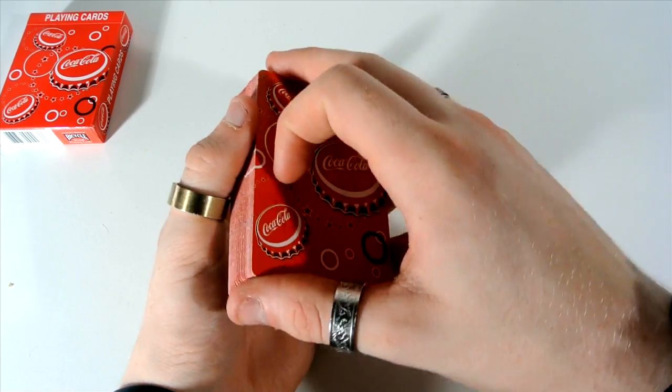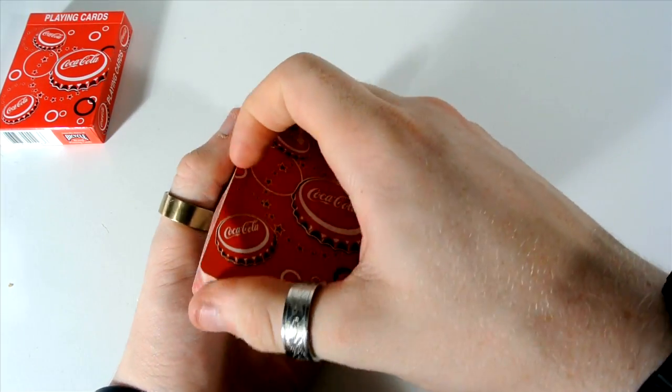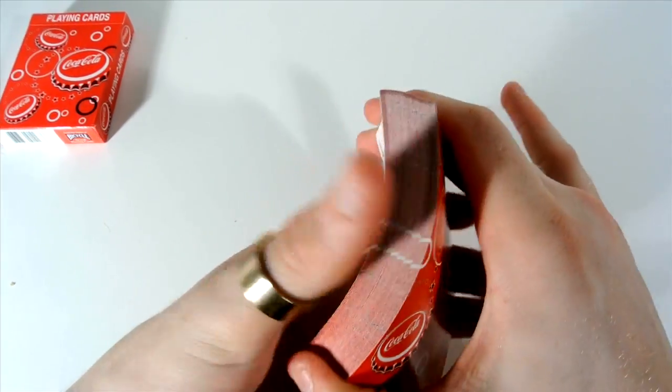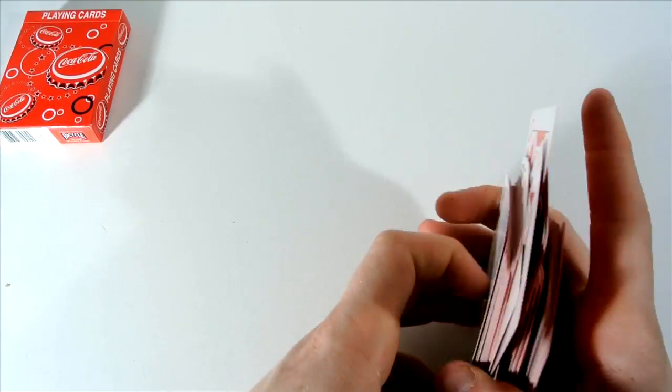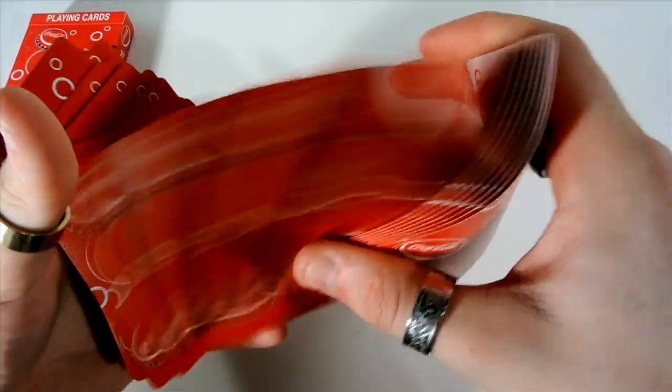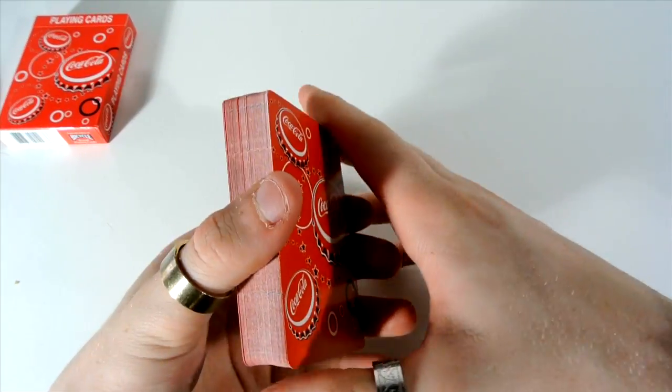So for handling, we can do a dribble with this deck. As you can see, it does dribble quite nicely for a plastic coated deck. As you can see, we can do a spring. Oh, very slippery actually for a plastic coated deck. And it doesn't feel like a cheap deck. It doesn't feel cheap. So that's also a bonus.